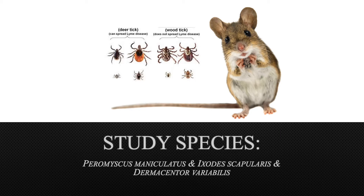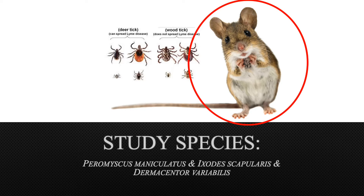For my own research, I focused on the relationship between deer mice hosts and the ticks that parasitize them, specifically deer ticks and wood ticks. Deer mice are found across North America. They are an important host for larval and nymph ticks, who require blood meals in order to reach their next life stage and help to establish new populations. Because this mouse species is so widely abundant, they are one of the most common hosts for ticks, which makes them an exemplary study species.